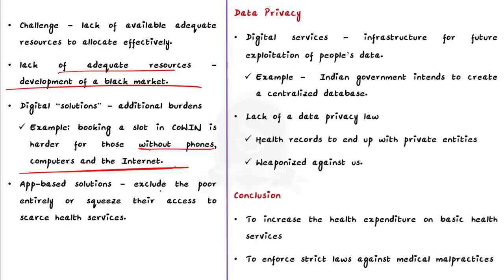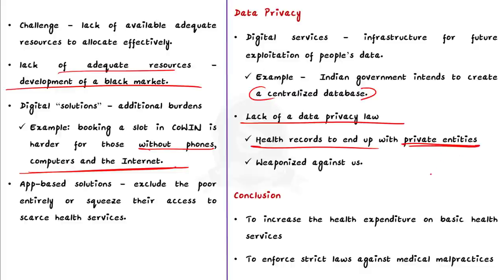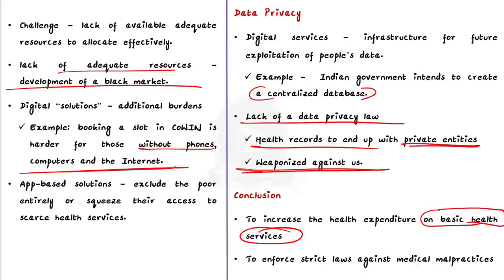In the last segment, the author focuses on data privacy, warning that digital services create infrastructure for future exploitation of people's data. The interoperability of patients' electronic health records can be achieved by decentralizing digital storage, but the Indian government intends to create a centralized database — a matter of concern because the lack of a data privacy law in India means health records could end up with private entities without consent and be weaponized against individuals. The author concludes that unless health expenditure on basic services increases and laws against medical malpractices are enforced, apps like Aarogyasetu, Aadhaar and digital health IDs can only improve matters marginally, and digital solutions will only distract from real problems.